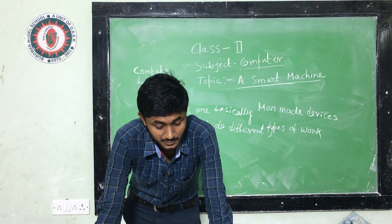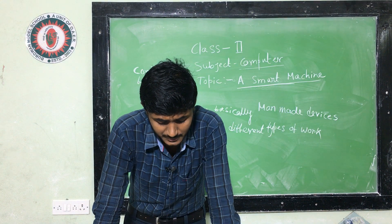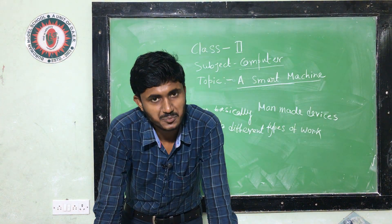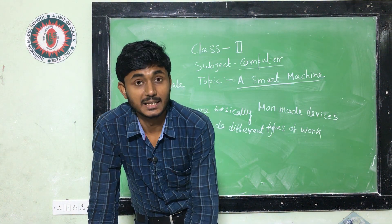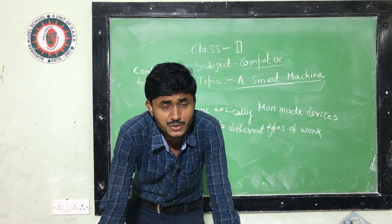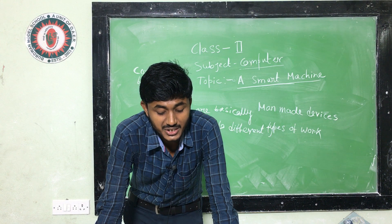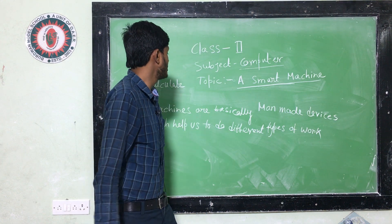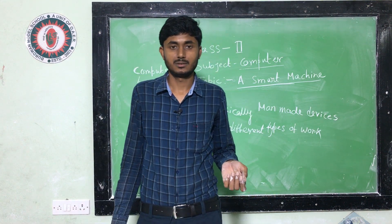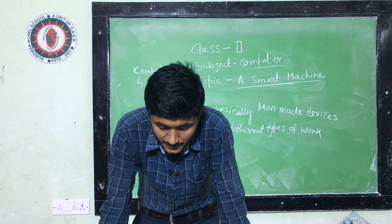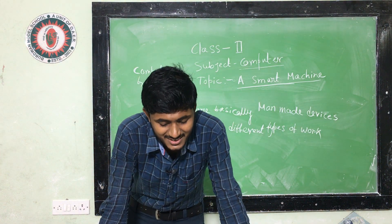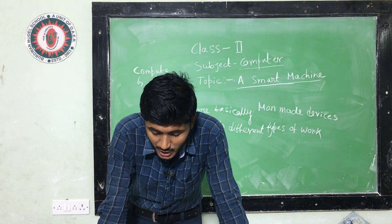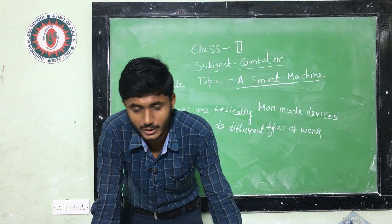Next is accuracy. A computer does not make mistakes, but humans can make mistakes. Next is decision-making. A computer does not have the capability to think or take decisions on its own, as it is a machine created by humans. But humans can make decisions and have the capability to think.